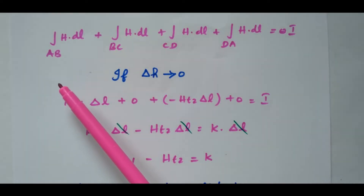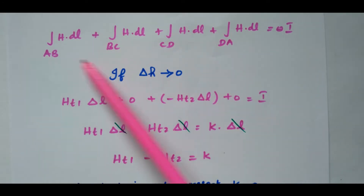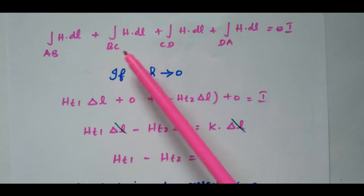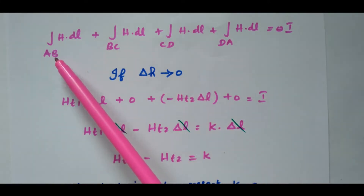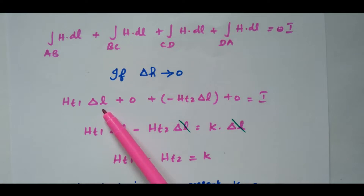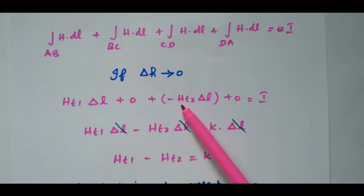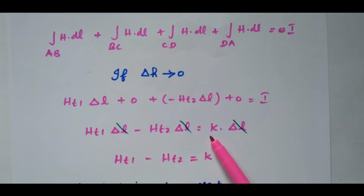The closed path ABCDA is split into four parts: AB, BC, CD, and DA, and their sum equals I. Assuming delta_H approaches zero, BC and DA become zero. Only AB and CD remain. The magnetic field intensity in AB is HT1 into delta_L. The magnetic field intensity in CD is negative HT2 into delta_L, because the directions are different. That gives HT1·delta_L minus HT2·delta_L equals I, which is K into delta_L.